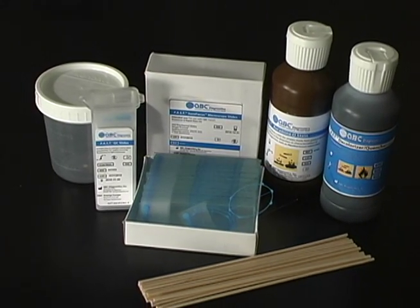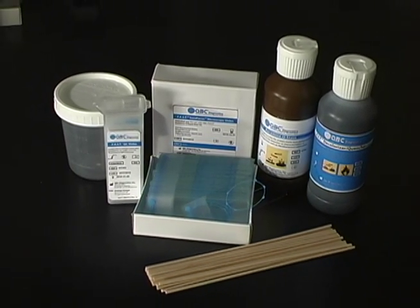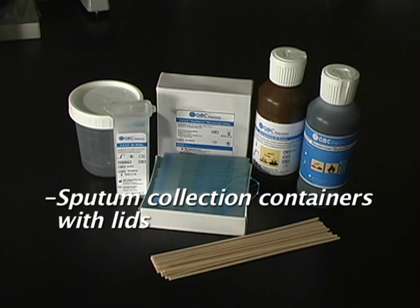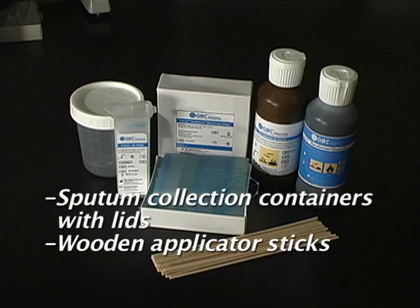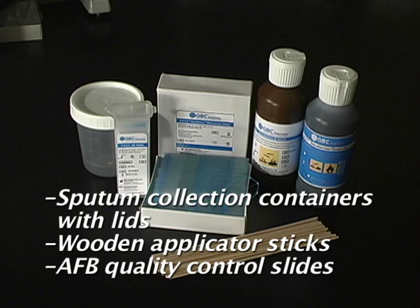In addition to these components, your Fast AFB Smear Kit contains the following: sputum collection containers with lids, wooden applicator sticks, and AFB quality control slides.